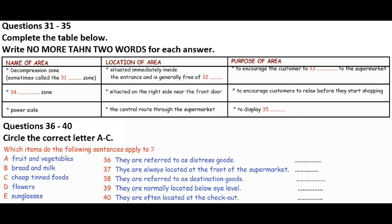Finally, let's have a look at the checkout area here. Now, we all know that sweets are deliberately placed within the reach of children at the checkout. Now, does anyone have any questions? That is the end of part four. You now have half a minute to check your answers.